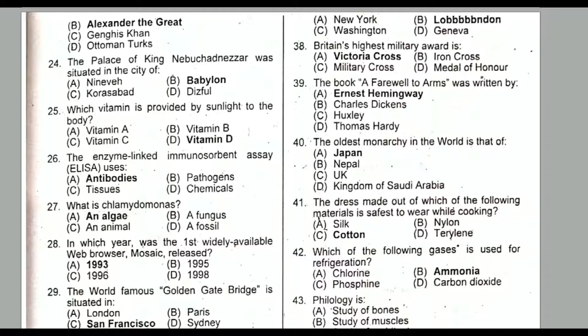Question number twenty-six: The enzyme-linked immunosorbent assay (ELISA) uses antibodies. Option A is the correct option.